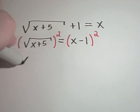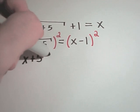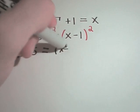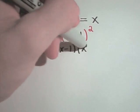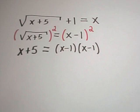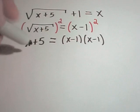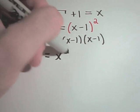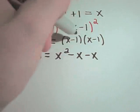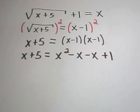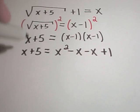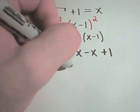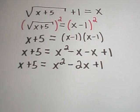Remember, if you square a square root, you simply get what's underneath the square root. And let's be careful with our x minus 1 squared — we have to FOIL that out completely. So on the left side, I'm just left with x plus 5. If I distribute, I'm going to get x squared, minus x, another minus x, and then a positive 1.